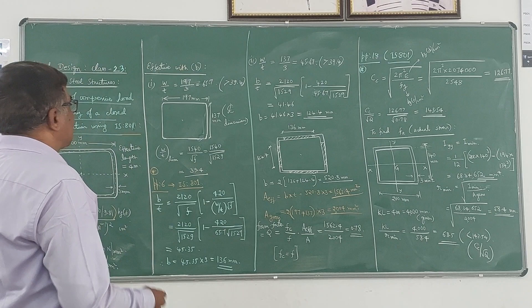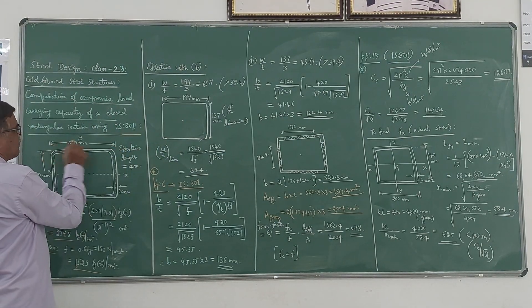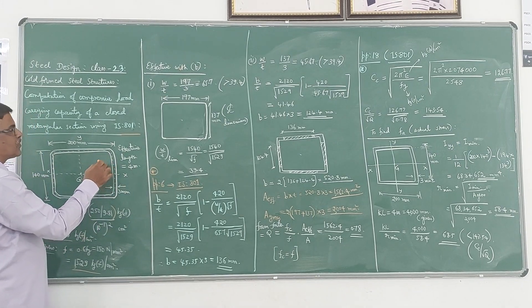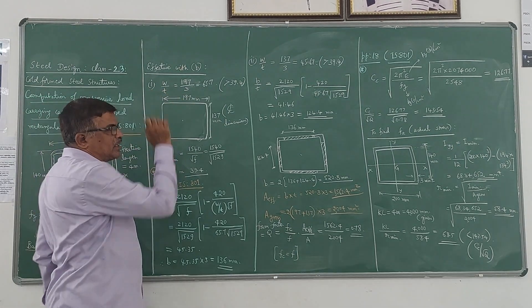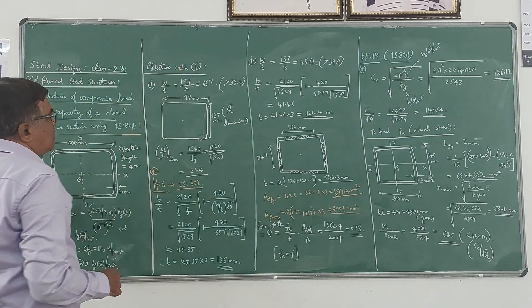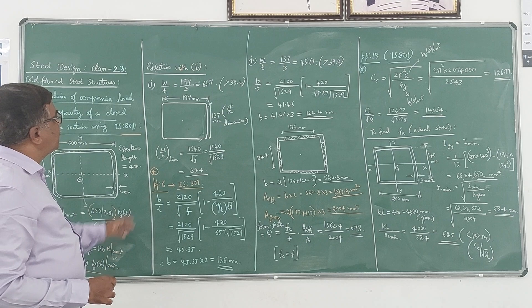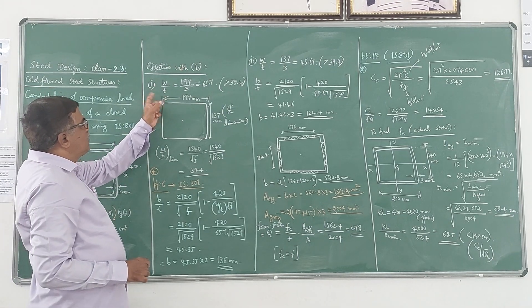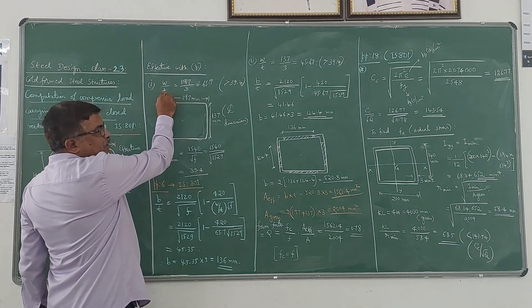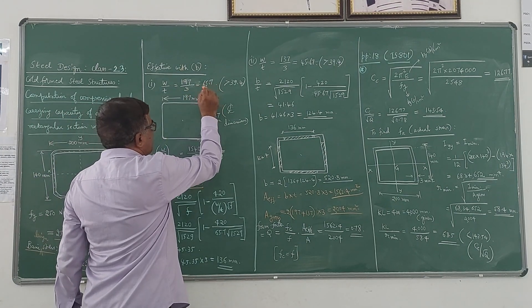Along the X direction, the total width is 200mm. Deducting the 3mm thickness gives the centerline dimension of 197mm. In the Y direction, it is 140 − 3 = 137mm. Calculating W/T along the X direction: 197 divided by 3mm gives 65.7.